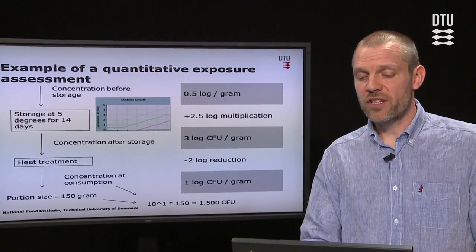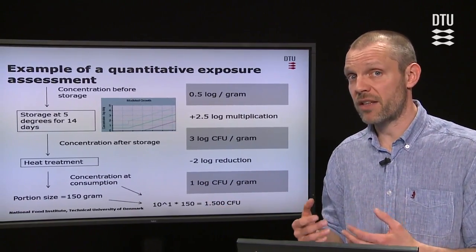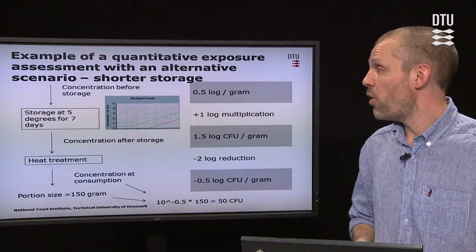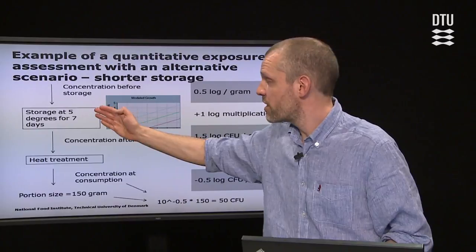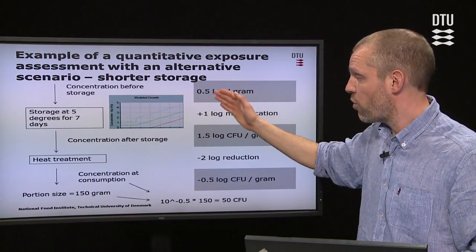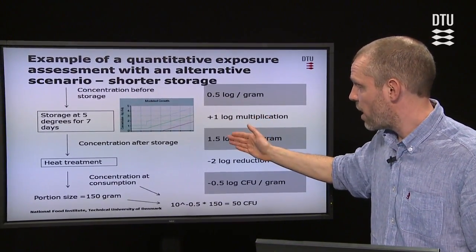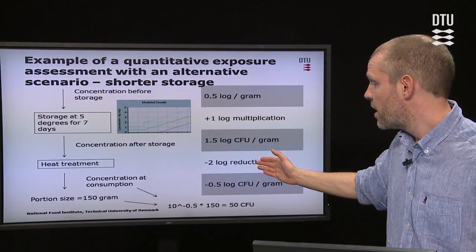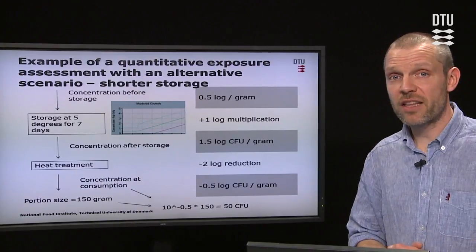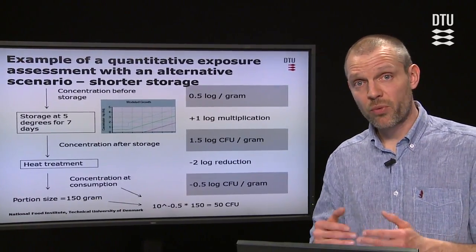The strength of quantitative exposure assessment is that it is easier to communicate, but it is much tougher to perform — you need much more information and more mathematical skills. You can also run alternative scenarios. Here I show an example where we just change the storage from 14 days to 7 days — that is the only difference. We start with the same concentration, but due to the shorter storage time we have only 1 log multiplication, giving 1.5 logs after storage. Same heat treatment, and it ends up at minus 0.5 log CFU per gram. The total exposure at consumption in this case will be 50 CFUs, compared to 1500 CFUs in the previous example.